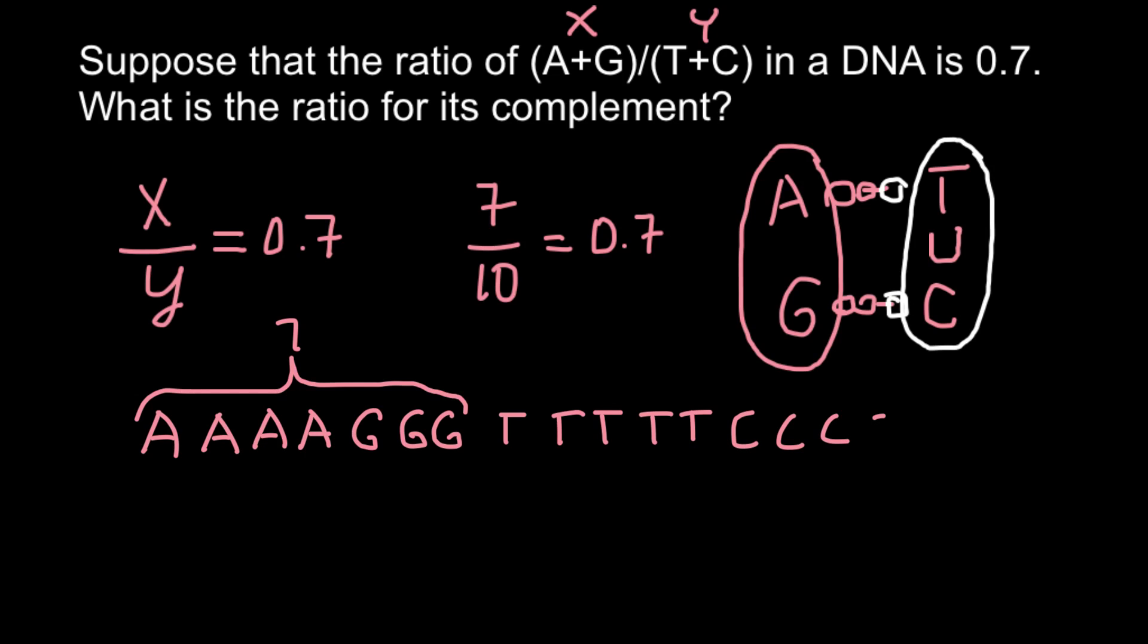As you remember, if on one strand we have 7 purines, this would be for example 5 adenines and 2 guanines. And we have 10 pyrimidines - 5 thymines and 5 cytosines. So here we have 10 pyrimidines, and this is how we got this ratio 7 to 10, which equals 0.7. This is adenine and guanine, and here we have thymine and cytosine. Not necessarily 5 to 5 - we may have here 9 thymines and 1 cytosine, it doesn't matter. What matters is that this is going to be pyrimidines.